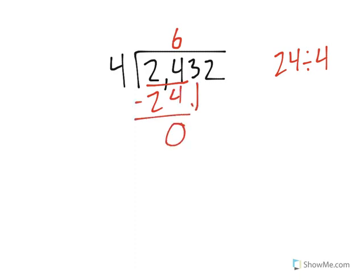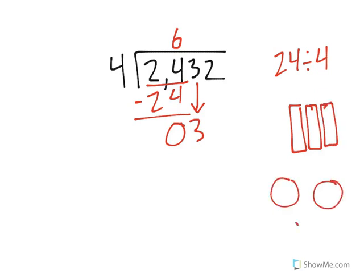We'd have no remainder, and we'd bring down the next number. Now the question is asking, if we have three 10s, and we're going to fit those into 4 groups, here are 4 groups, how many 10s would fit evenly into each group?